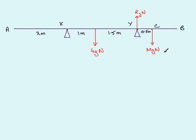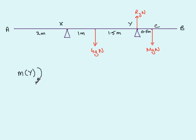Our job is to find M, so we need to take moments. The best place to take moments is about Y, because the reaction RY passes through point Y and will not enter the equation. Since we don't know RY, that's a good reason to take moments about Y, with the clockwise direction taken as positive.